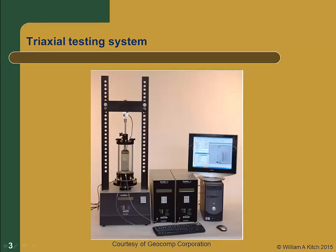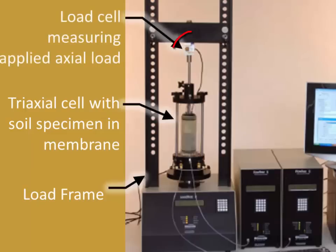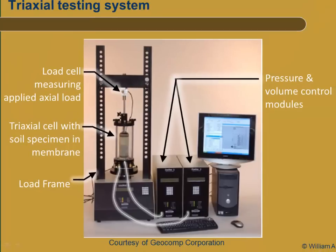This is a picture of a typical triaxial test. The specimen being tested is located in the triaxial cell and enclosed in a flexible membrane. The triaxial cell is placed in a load frame. The purpose of the load frame is to apply a vertical load to the specimen, measured by a load cell located near the top of the load frame. Tubing connects the cell to pressure and volume control modules, which are used to regulate and measure the pressure within the cell as well as control the drainage of pore fluid out of the specimen. A computer data acquisition system controls the test and records the data.